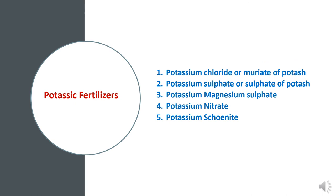There are different types of Potassium fertilizers available in the market: Potassium Chloride or Muriate of Potash, Potassium Sulphate or Sulphate of Potash, Potassium Magnesium Sulphate, Potassium Nitrate, and Potassium Sainite, about which we will study in detail.